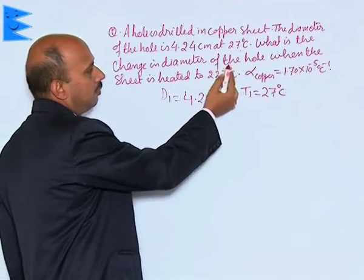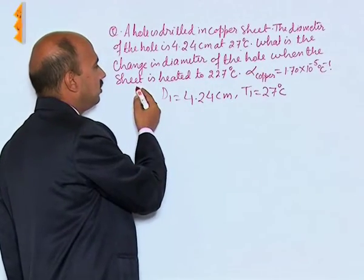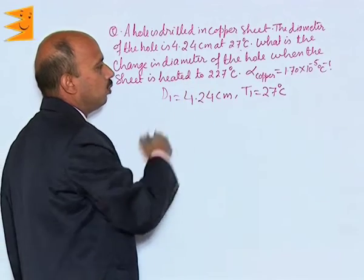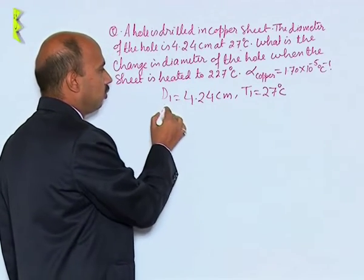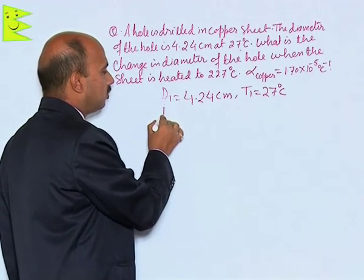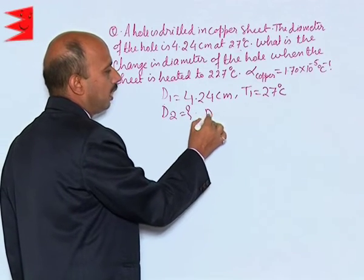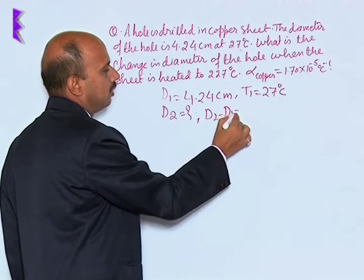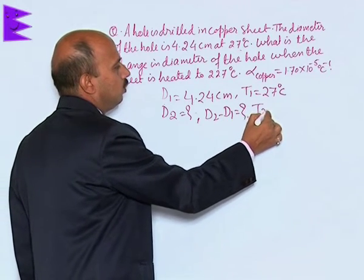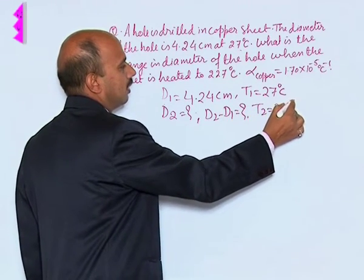Now, what is the change in the diameter of the hole when the sheet is heated to 227 degree Celsius? So here you have to actually calculate D2, the final diameter. We have to calculate D2 minus D1, and T2 is given to you 227 degree Celsius.